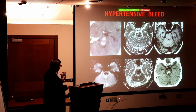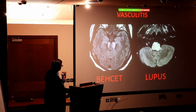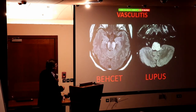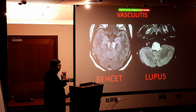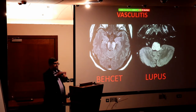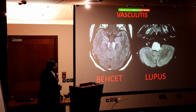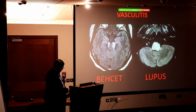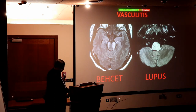Hypertensive bleeds can present in the brain stem and be mistaken for a tumor. Vasculitis is another pathology we forget about — we tend to think in one track. Patients with Behçet's disease can present with vasculitis in the brain stem. Vasculitis is an ocean of diseases.